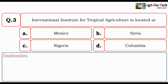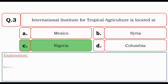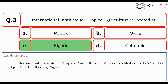Next question: The International Institute for Tropical Agriculture is located at — Mexico, Syria, Nigeria, or Colombia? The correct answer is Nigeria. The International Institute for Tropical Agriculture was established in 1967 and is headquartered in Nigeria.